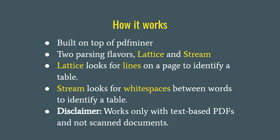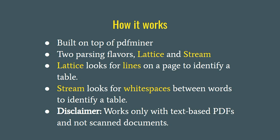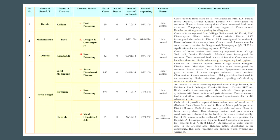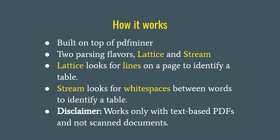Camelot comes with two parsing flavors: Lattice and Stream — names inspired by Tabula. Lattice looks for lines on a PDF page to identify a table, so if your table has lines, you'd use Lattice. If the table doesn't have lines, you should use Stream. Lattice converts the PDF page into an image using Ghostscript and then uses OpenCV to identify lines. Stream looks for text edges on a page — basically how your text is aligned, left, right, or center — to form the table representation. Note that Camelot currently only works with text-based PDFs and not scanned documents. If you can click, drag, and select text on your PDF, it's text-based.